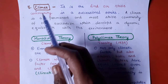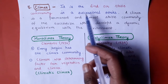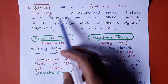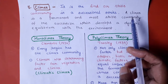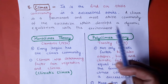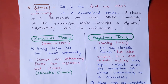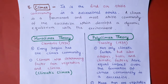The final step of the process of succession is the climax, which is the final or stable community in the successional series. A climax is a permanent and most stable community of succession that develops a kind of dynamic equilibrium with the environment. The community that is able to resist changes within the environment and maintain balance is regarded as the climax community — the most stable form of community within the successional series.